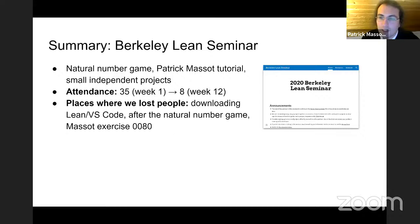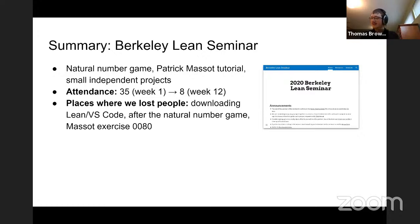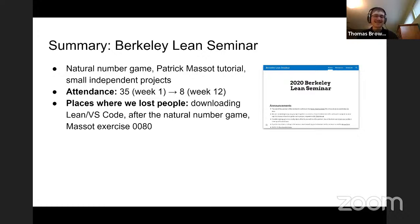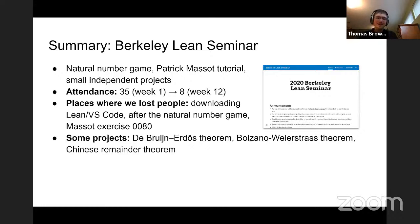The last exercise of Patrick Massot's tutorial — exercise 80, I think the intermediate value theorem — is the final boss of the game, and some people tried valiantly to fight it without success. Some of the small projects people did included the De Bruijn-Erdős theorem from graph theory, the Bolzano-Weierstrass theorem, and the Chinese remainder theorem in number theory.